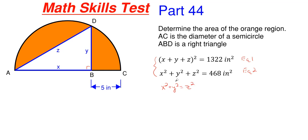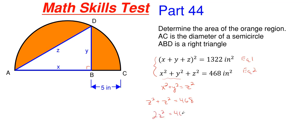What I can do is take X squared plus Y squared and plug it in for Z squared in equation two, resulting in Z squared plus Z squared equal to 468 inches squared. So essentially I have 2Z squared is equal to 468. So Z would be equal to the square root of 468 over 2, which is equal to the square root of 234, which is equal to 3 square roots of 26 inches.